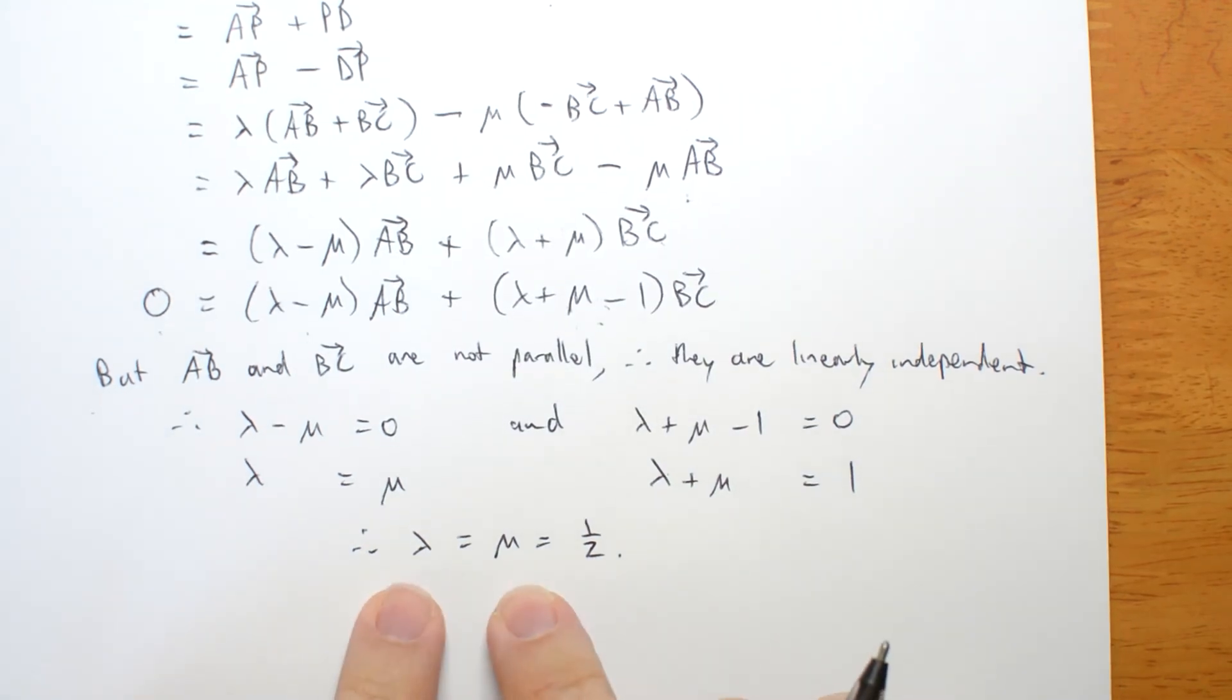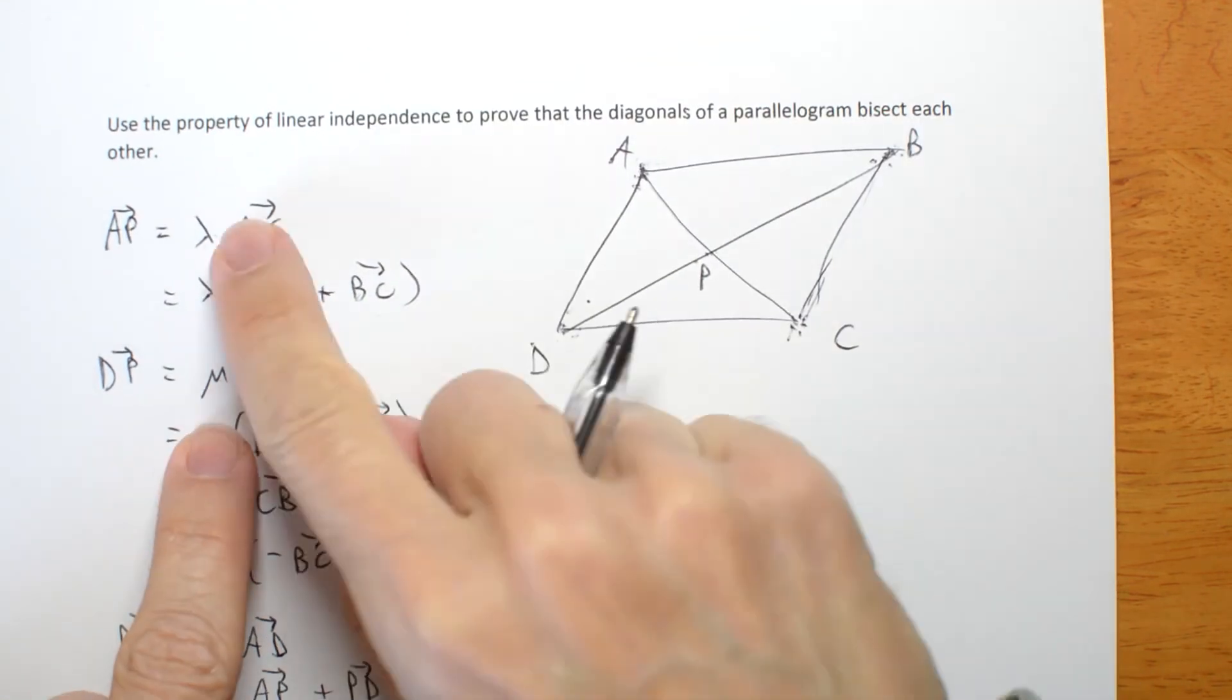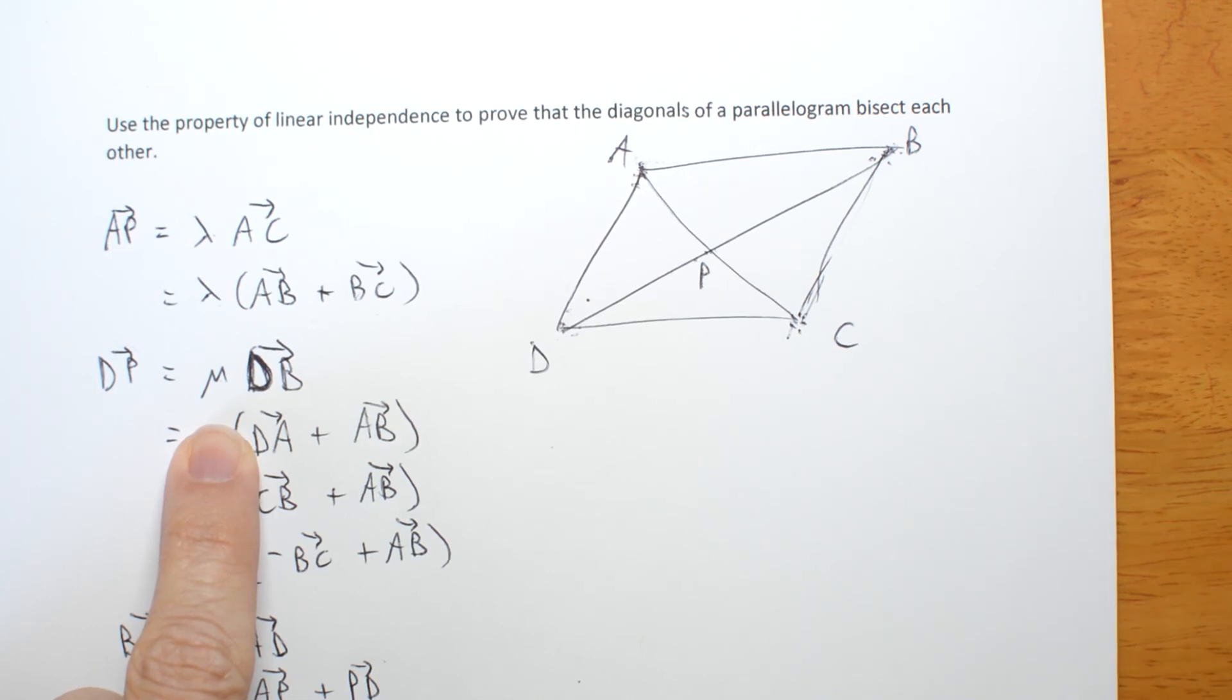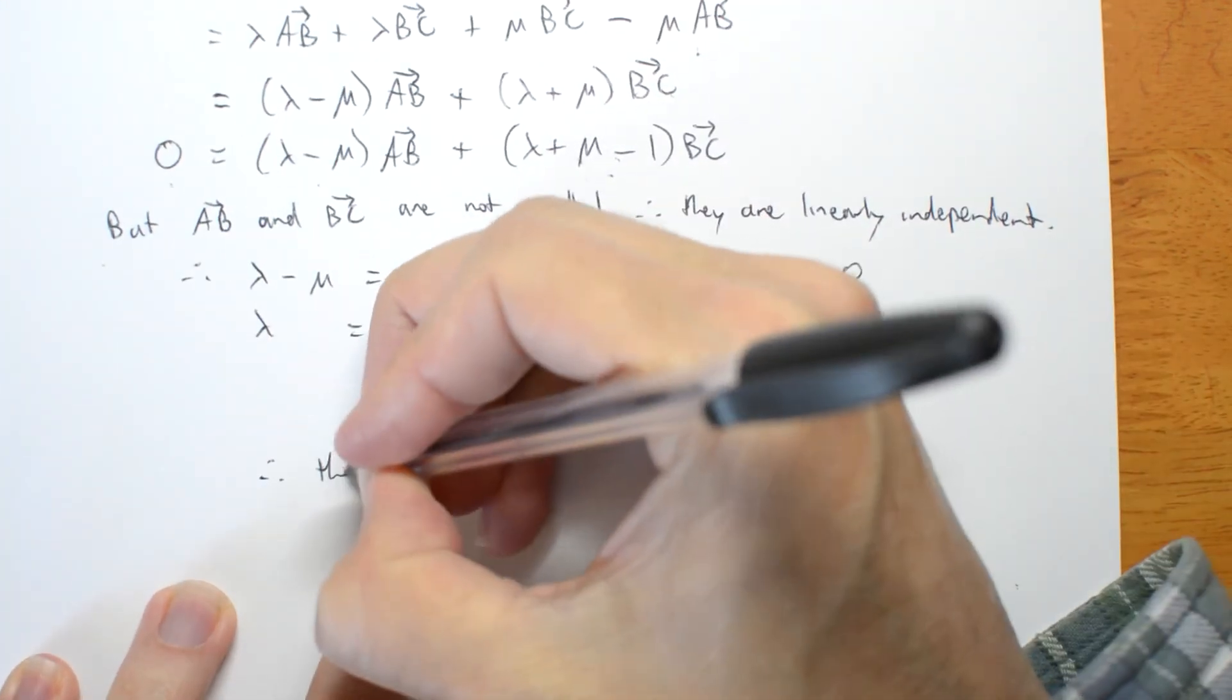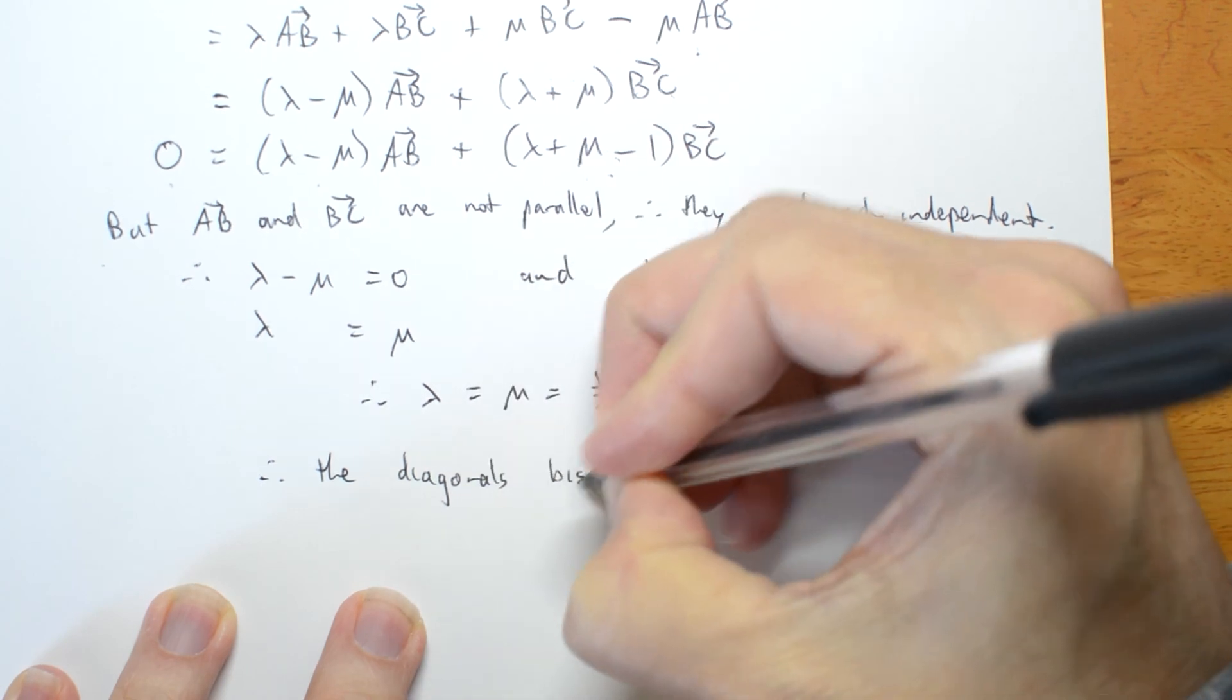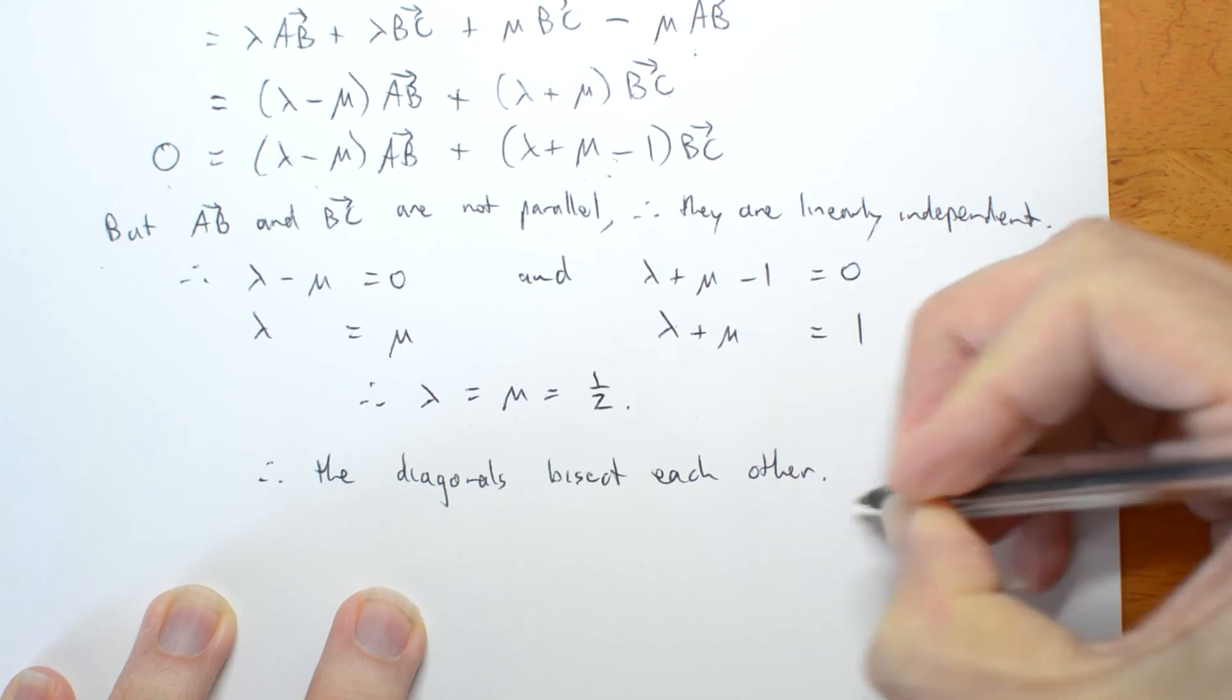But if they're both a half, then I have split my diagonals exactly in half. And the diagonals bisect each other. Therefore, the diagonals bisect each other. And I'm done.